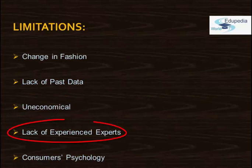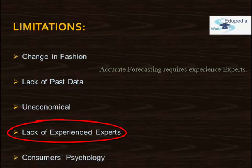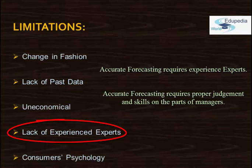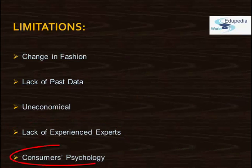Next is the lack of experienced experts. Accurate forecasting necessitates experienced experts who may not be easily available. It requires proper judgment and skills on the part of managers — it is not a random process, and the person at the helm needs to know the process, the method, and all its requirements. Forecasts may go wrong due to bad judgment and skills on the part of some managers. Forecasting by less experienced individuals may lead to erroneous estimates; therefore, forecasts are subject to human error.